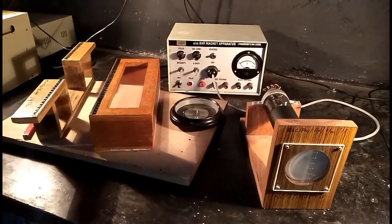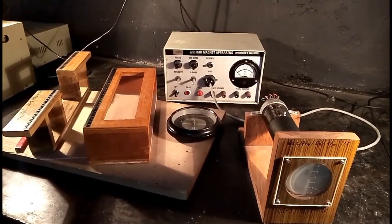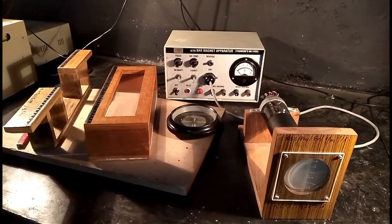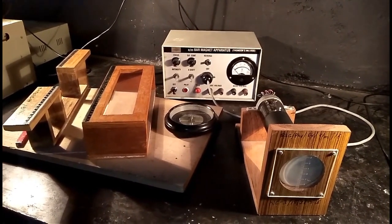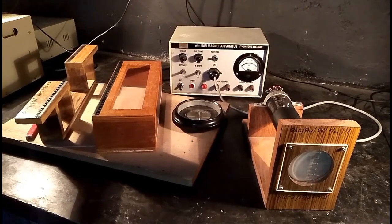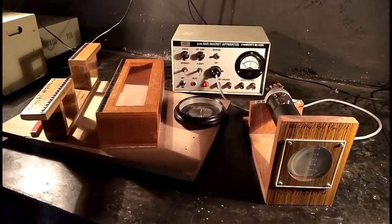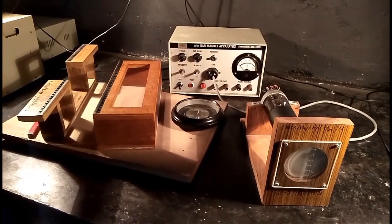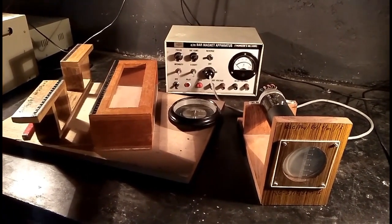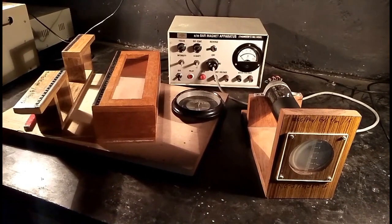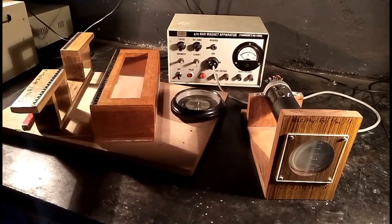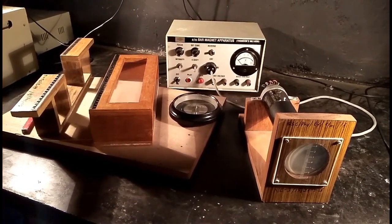We know that the value of charge of electron E is equal to 1.6 into 10 raised to the power minus 19 Coulomb, and the mass of electron m is equal to 9.1 into 10 raised to the power minus 31 kg. Now here we have to measure the specific charge by Thomson's Bar Magnet Method.